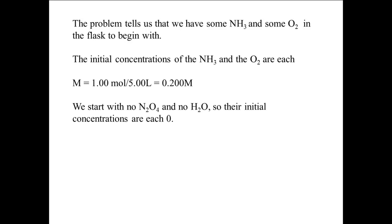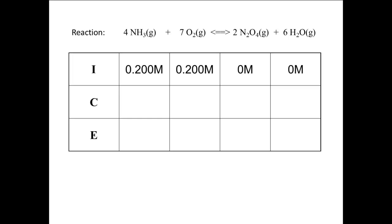We start with no N2O4 and no H2O, so their initial concentrations are each 0. The first row of the ICE box becomes 0.200 molar for each of NH3 and O2, and 0 molar for each of N2O4 and H2O.